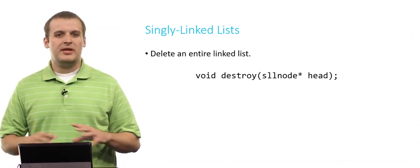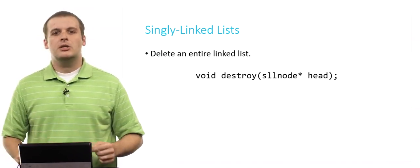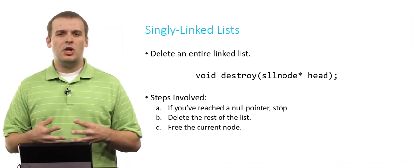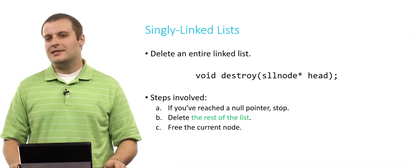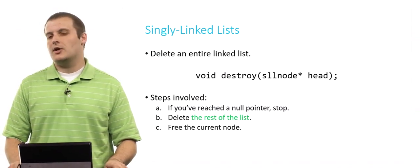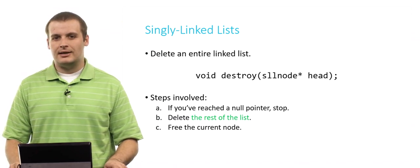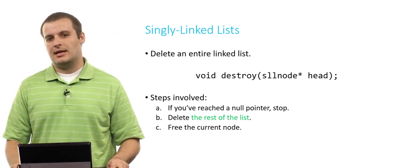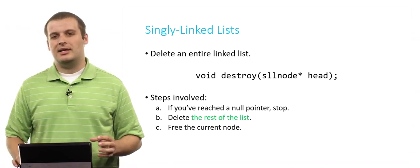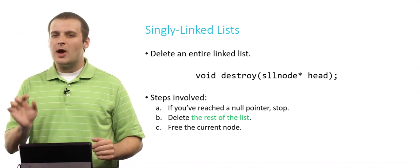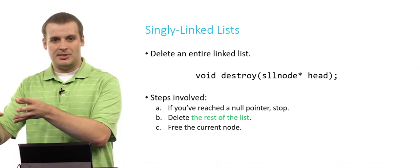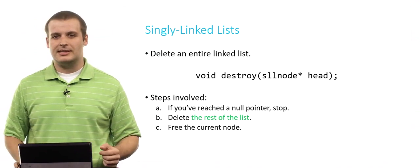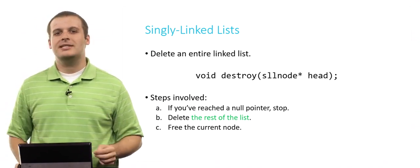What if we want to get rid of an entire linked list at once? We're mallocing all this space, so we need to free it when done. The logic: if we've reached a null pointer, stop. Otherwise, delete the rest of the list and then free the current node. That sounds like recursion - we've made the problem a little smaller: delete everybody else, then come back and delete me. Eventually we get to the point where the list is null - that's our base case.